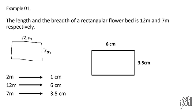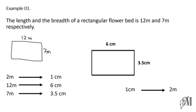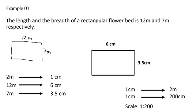We have completed drawing, but we still have the fourth step: write down the scale. One centimeter represents 2 meters. We write the scale as a ratio, and since the units must be the same, 2 meters equals 200 centimeters. So the scale is written as 1:200, meaning 1 centimeter represents 200 centimeters.